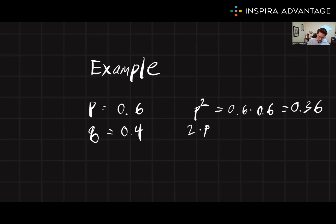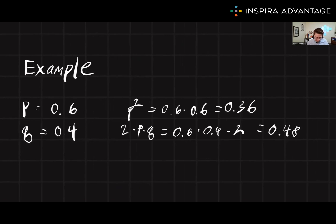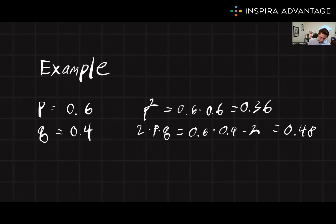How about the heterozygous group? Well, this is 2 times p times q, or 0.6 times 0.4 times 2. And this is going to equal 0.48, or 48%. And finally, if we want to find the homozygous recessive, we'll just take q², which is 0.4 times 0.4, which is just simply 0.16.